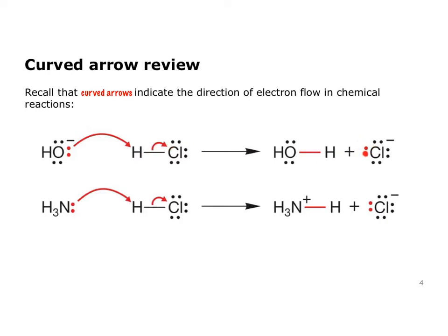The bond breaks in such a way that those electrons end up on chlorine as a non-bonded pair. The second example is also an acid-base reaction, with the only difference being a different base — ammonia. The ammonia acts as a Lewis base, an electron-pair donor. It's using that pair of electrons to form a bond to hydrogen, and at the same time, we have to break a bond to hydrogen, and those electrons go with chlorine to form the chloride ion.